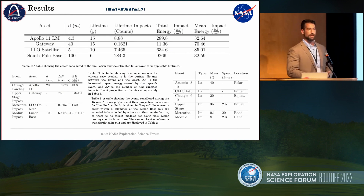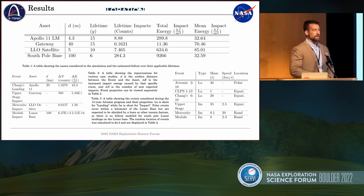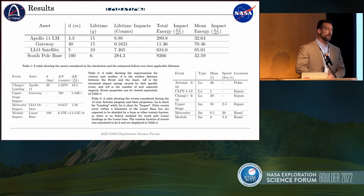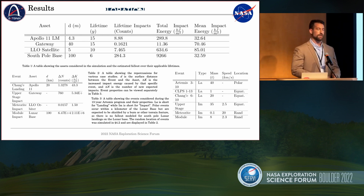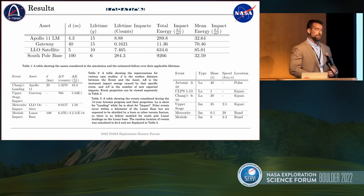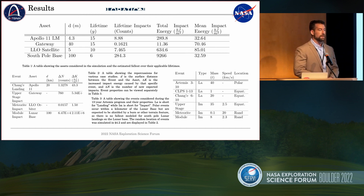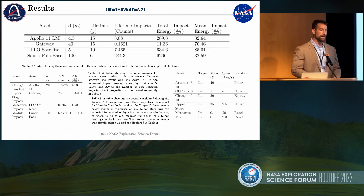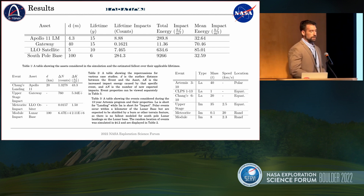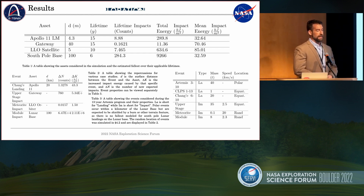These are what those simulations look like. From our last paper published with the International Association for the Advancement of Space Safety, we looked at the lunar gateway, a low lunar orbit satellite, and the South Pole base, examining total impact energy over various timescales — 15 years for the full Artemis program, a satellite placed there five years in, and a South Pole base started later. We also determine things like off-nominal situations such as a Chang'e landing or an upper stage impact — we had one of those on the moon recently. In the case of a lunar base, you can have an impact 100 kilometers away from a logistics module and it's very significant.